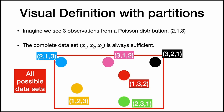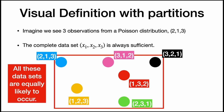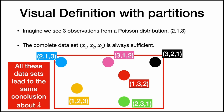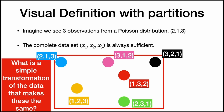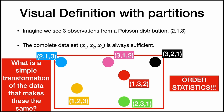But there are all these other data sets that are very similar — just in different orders. All of these data sets are equally likely to occur because our data is independent, and these are the same observations just in a different order. All of these data sets lead us to the same conclusion about the right lambda, so we want to consider these data sets the same. A simple transformation that makes these all the same is just ordering the data. The order statistics are also always sufficient when we have IID, or independent and identically distributed, data.